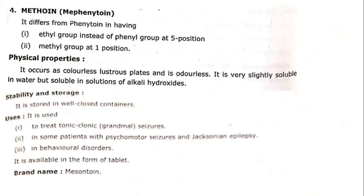Next is mephenytoin. It differs from phenytoin in having an ethyl group in place of a phenyl group at the five position, and a methyl group at the one position. Physical properties: it occurs as colorless lustrous plates and is odorless. It is very slightly soluble in water but soluble in solution of alkali hydroxide. It should be stored in a well-closed container. It is used to treat tonic-clonic seizures in some patients, and also to treat psychomotor seizures and Jacksonian epilepsy. It is used to treat behavioral disorders and is available in the form of a tablet.